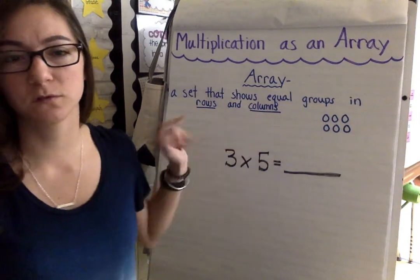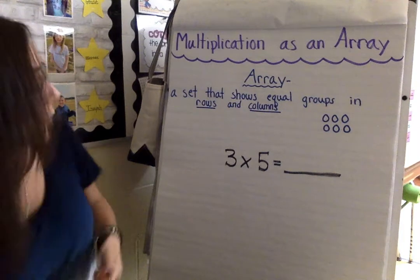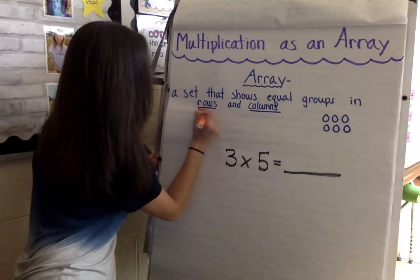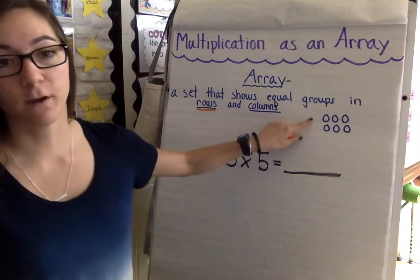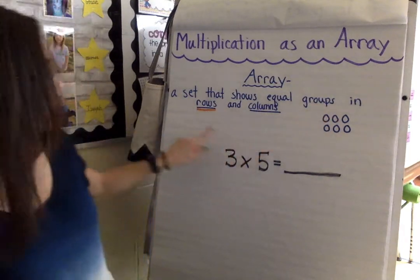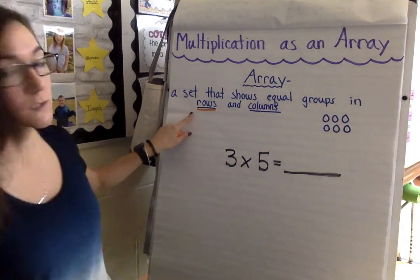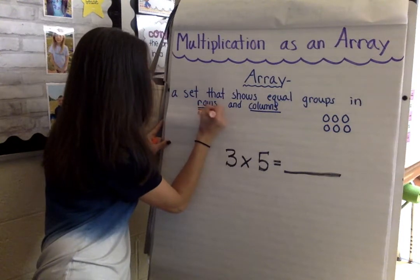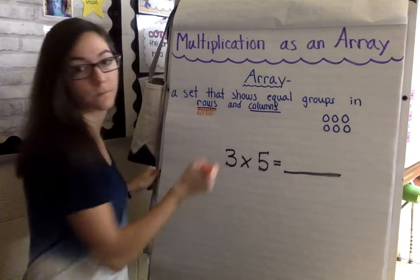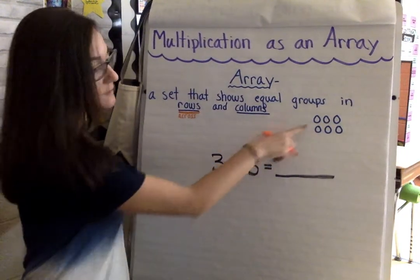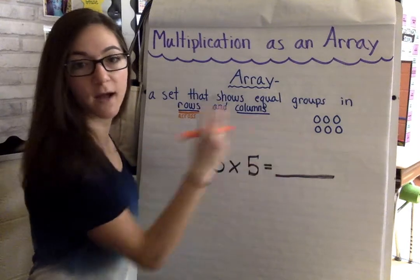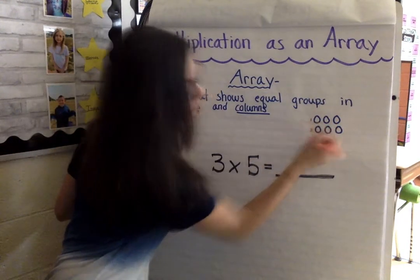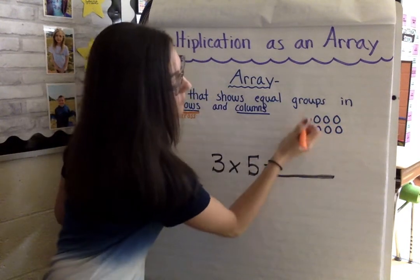Those words are very important to understand. Rows — say this is our array over here, this is an example of an array — rows go across. So this array right here has two rows: one, two rows going across.